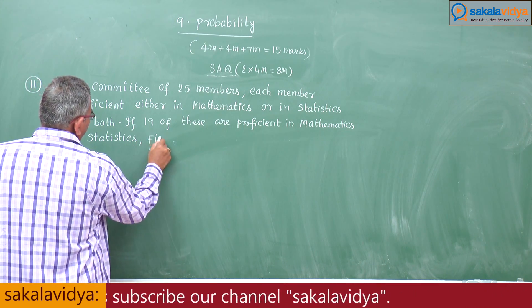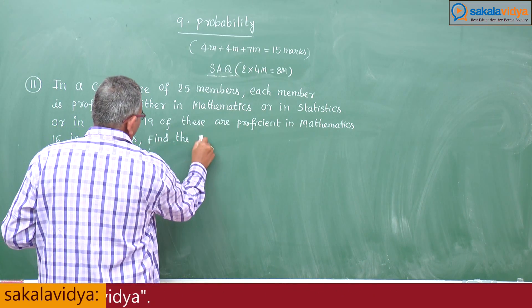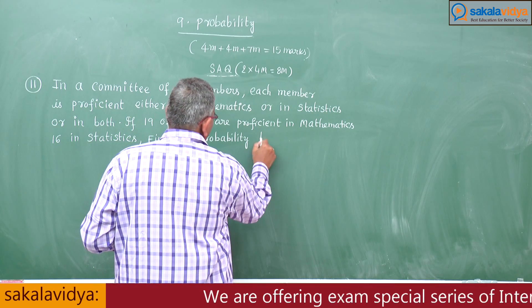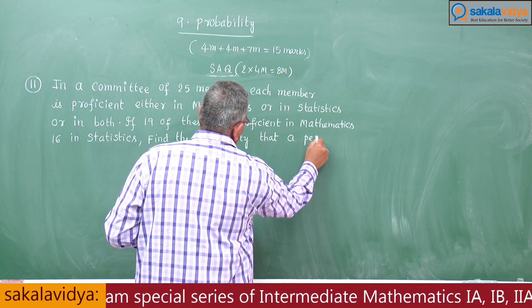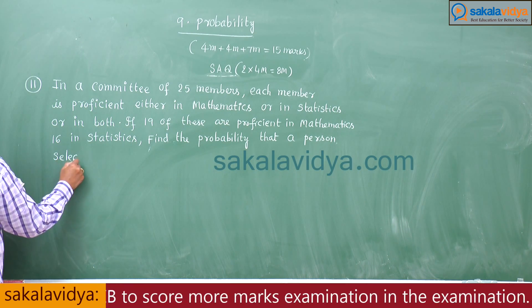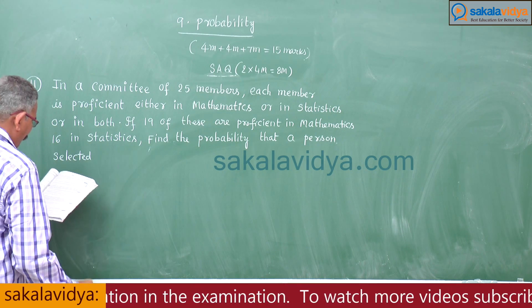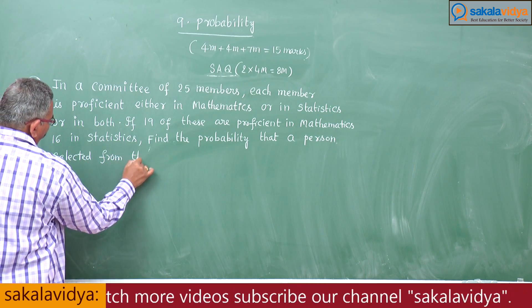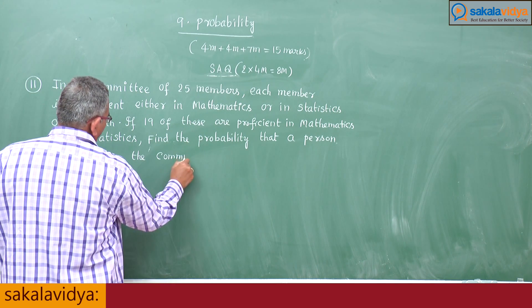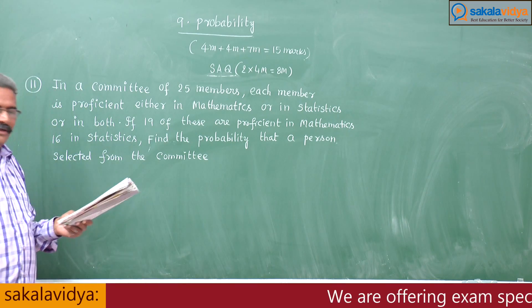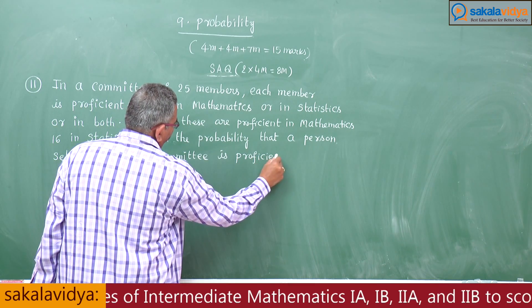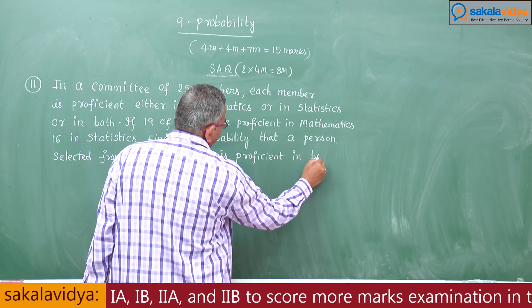Find the probability that a person selected from the committee is proficient in both. This is the question.